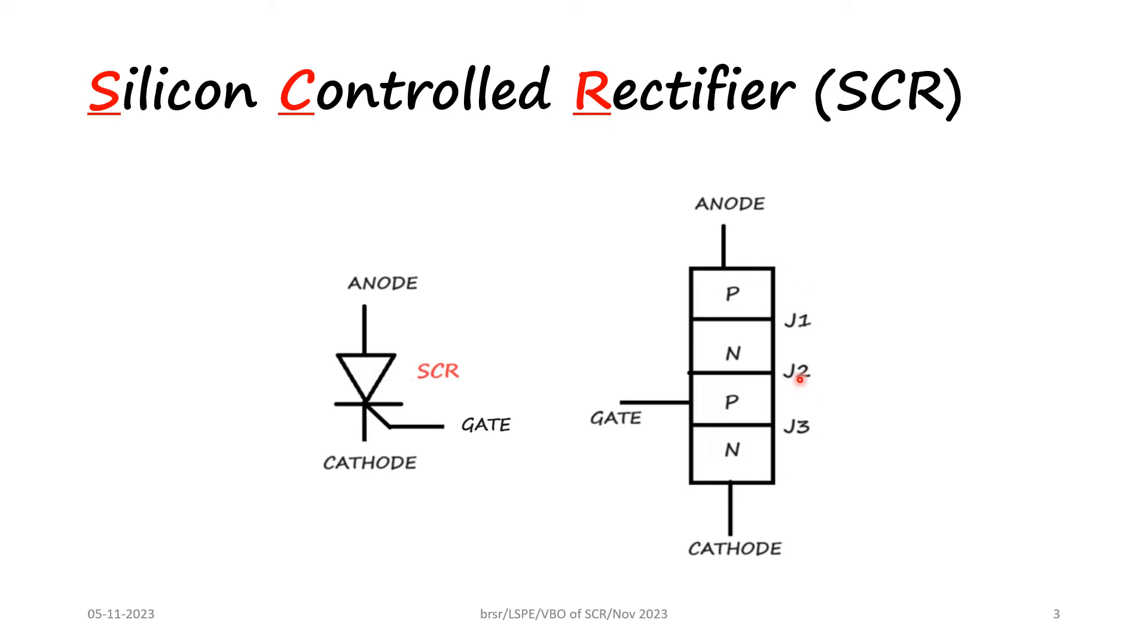The junctions J1, J2, J3 will be either forward biased or reverse biased based on the biasing given, that is based on the voltage applied between the anode and the cathode.